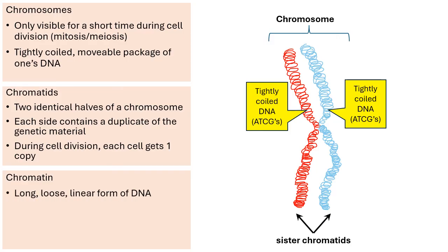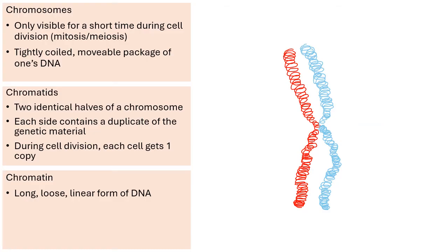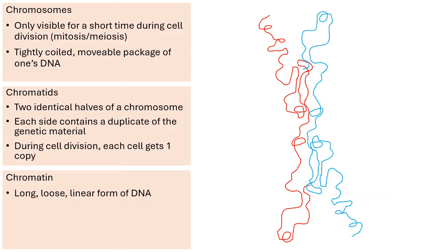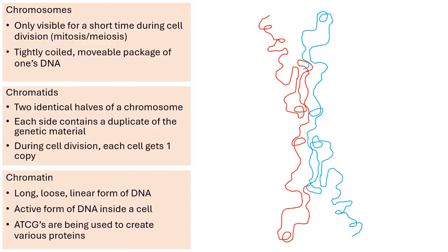So what is chromatin? Chromatin is the long, loose, linear form that DNA will be in at certain times in the life of a cell. The chromatid on the left — the red chromatid — can actually unravel into chromatin form. Same thing with the blue chromatid on the right. Chromatin is the active form of DNA. When DNA is in chromatin form, it's fulfilling its purpose: the A's, T's, C's and G's serve as instructions your cells follow to create various proteins. That's when DNA is specifically being used to create proteins.